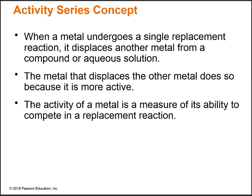Now we'll talk about single replacement reactions and the activity series. When a metal in a reaction replaces another metal in a solution or compound, that's called single replacement. The metal that displaces the other is more active — hence the activity series. The activity of a metal is based on its ability to compete in a replacement reaction. If metal A can replace metal B but not metal C, then C is most reactive, followed by A, then B.